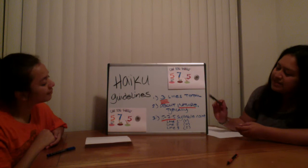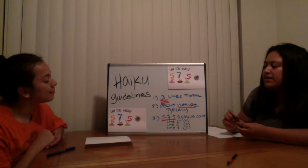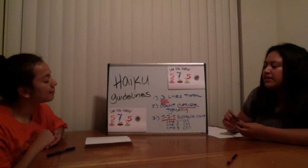And there's a syllable count: five, seven, five. Five syllables in the first line, seven syllables in the second, five in the third. So: three lines, five-seven-five, about nature.